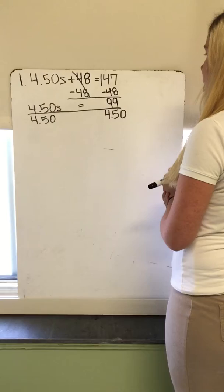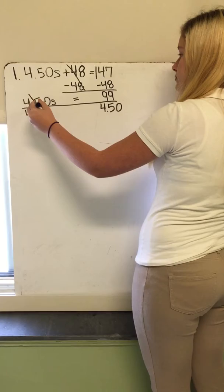$4.50S divided by $4.50 crosses each other out, and then you bring down the S.